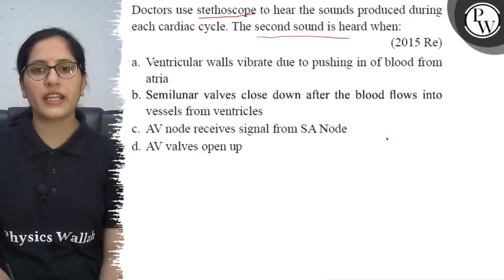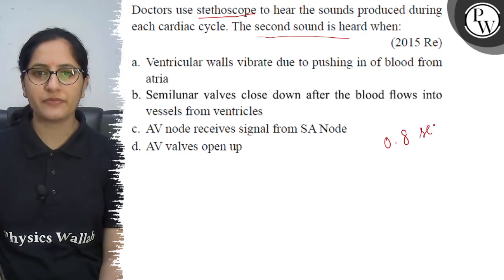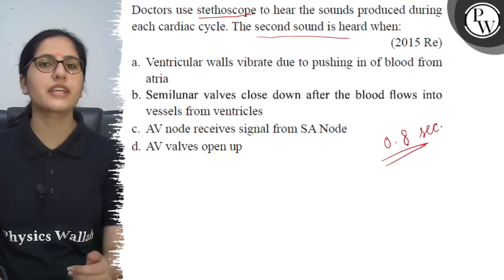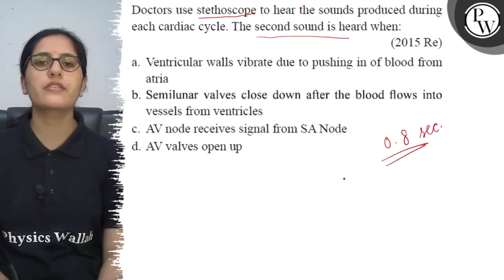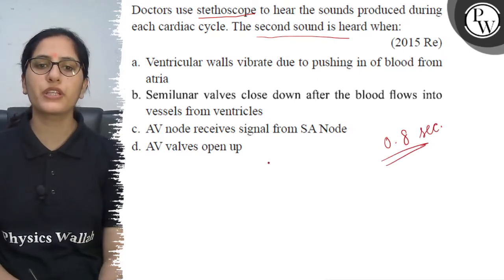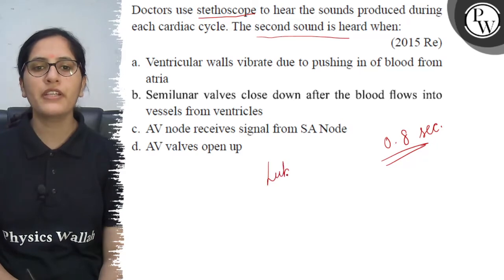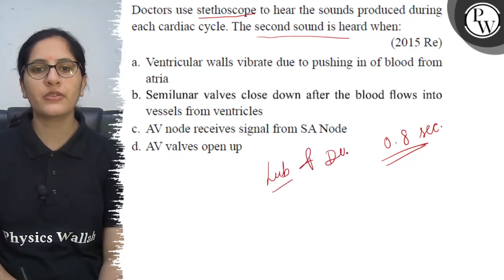Each cardiac cycle is of 0.8 seconds. Each cardiac cycle produces two heart sounds — one is called 'lubb' and the other one is called 'dub'.